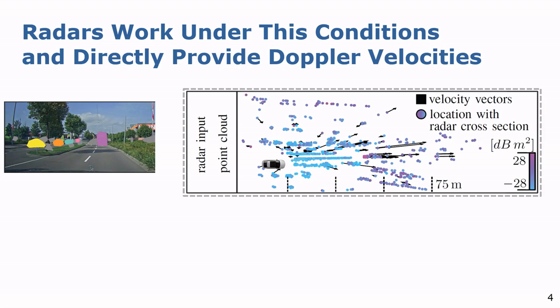And radar sensors provide the radar cross-section values, which depend on the material and the shape of the object, which helps to differentiate between different moving agents, but also track them over time.